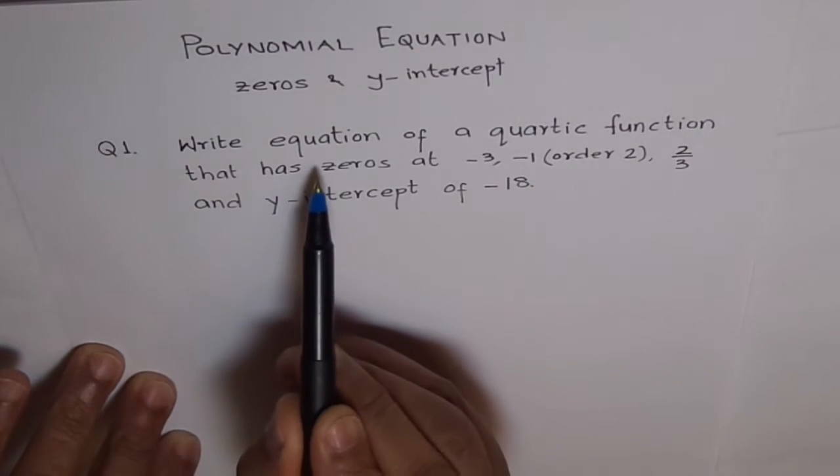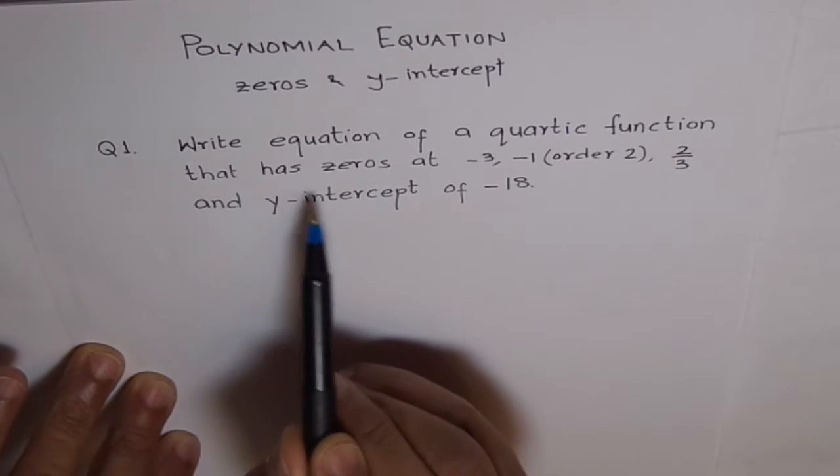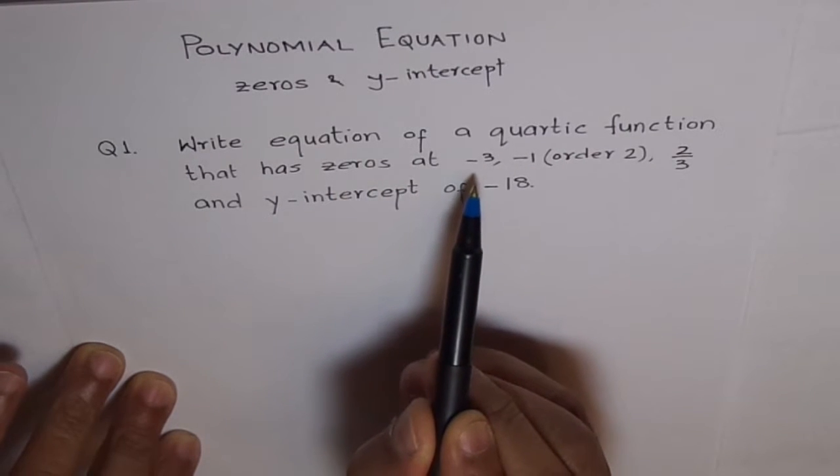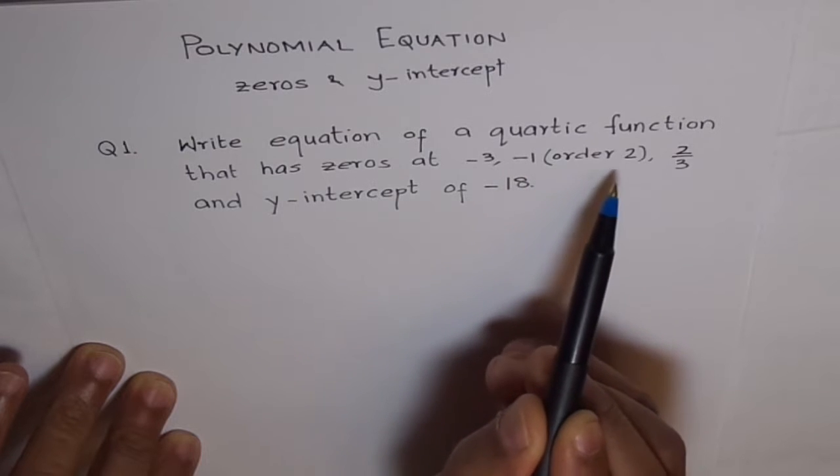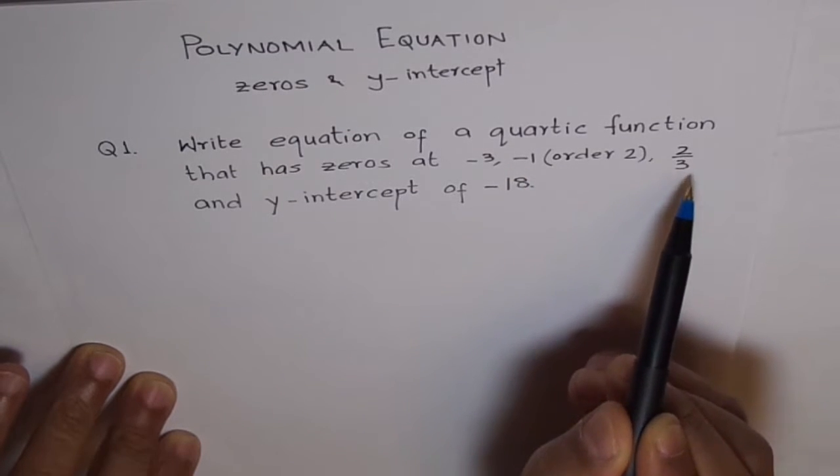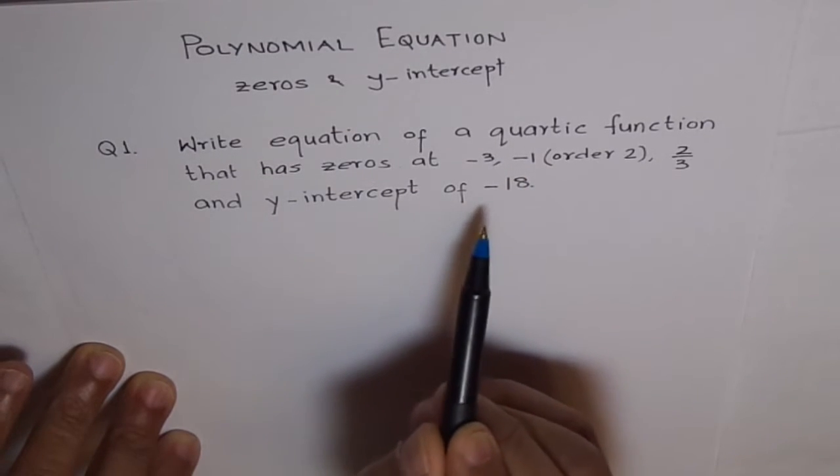Write equation of a quartic function that has zeros at minus 3, minus 1 of order 2, and 2 over 3, and y-intercept of minus 18.